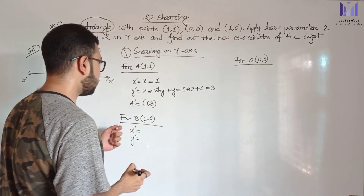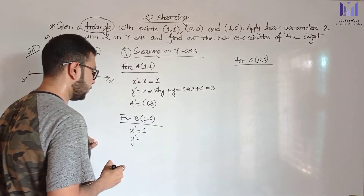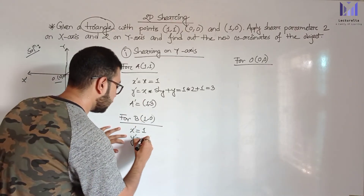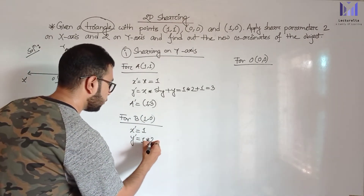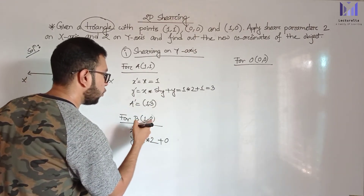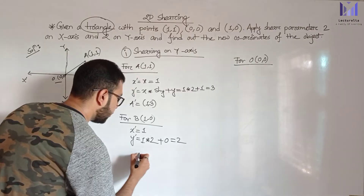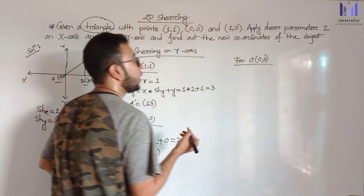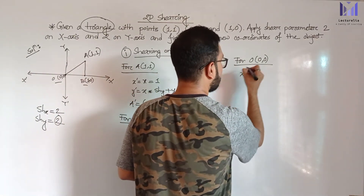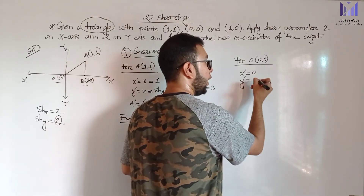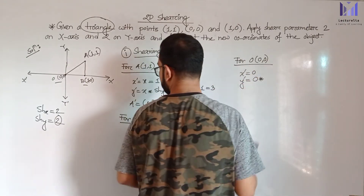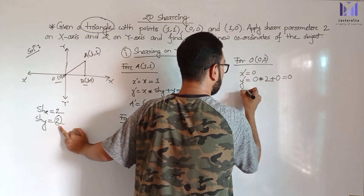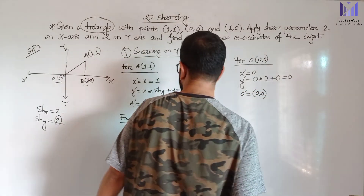For point B(1,0): X prime equals 1. Y prime equals Y plus X multiplied by shY, so Y prime equals 0 plus 1 multiplied by 2 equals 2. B prime is (1,2). For point O(0,0): X prime equals 0. Y prime equals 0 plus 0 multiplied by 2 equals 0. O prime equals (0,0).